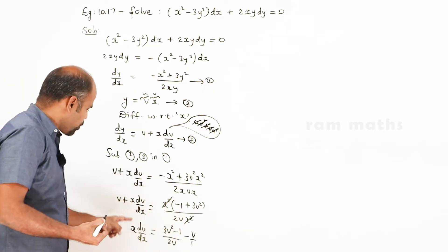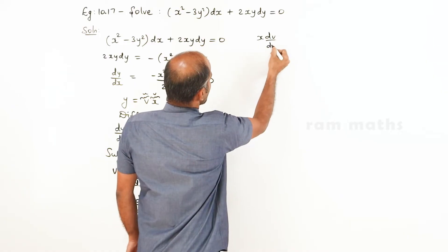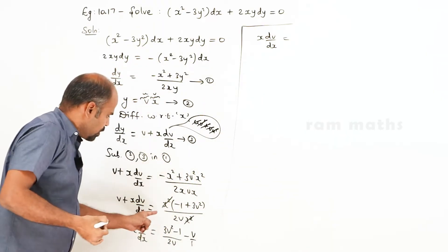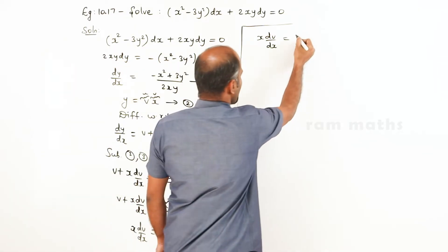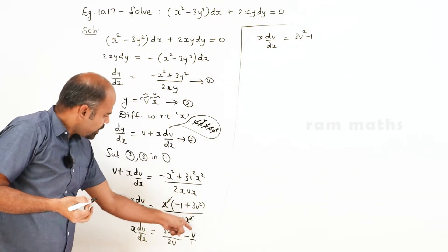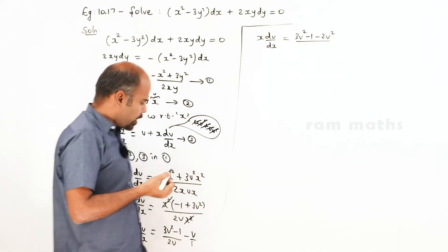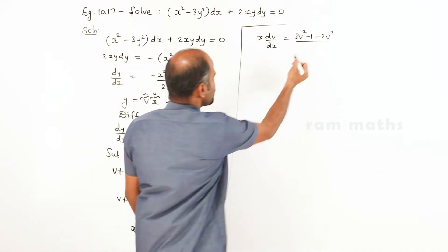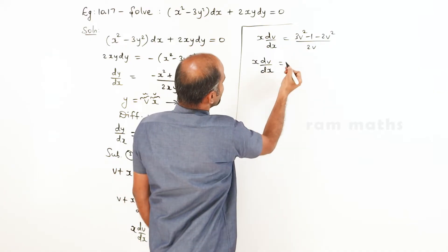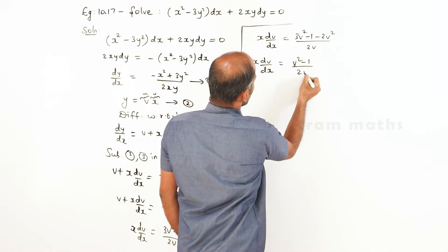So x dv/dx equals 3v² minus 1 by 2v, minus v. Making a common denominator, v times 2v gives minus 2v². Therefore x dv/dx equals 3v² minus 2v² minus 1 all by 2v, which simplifies to v² minus 1 by 2v.